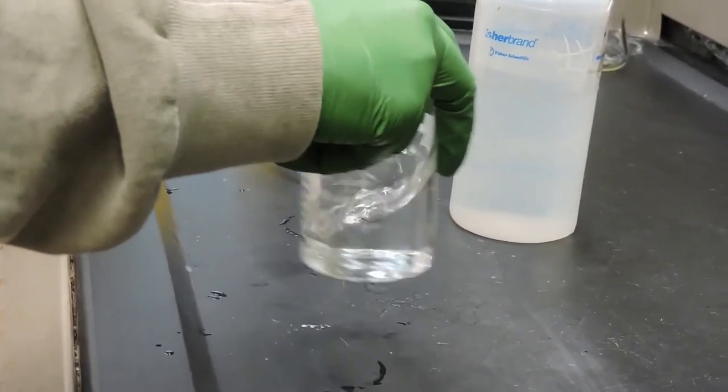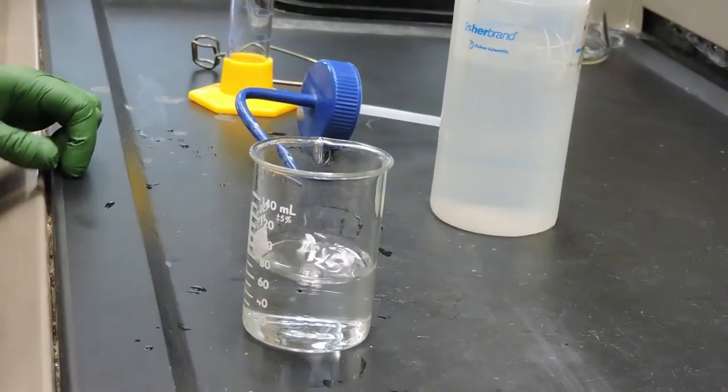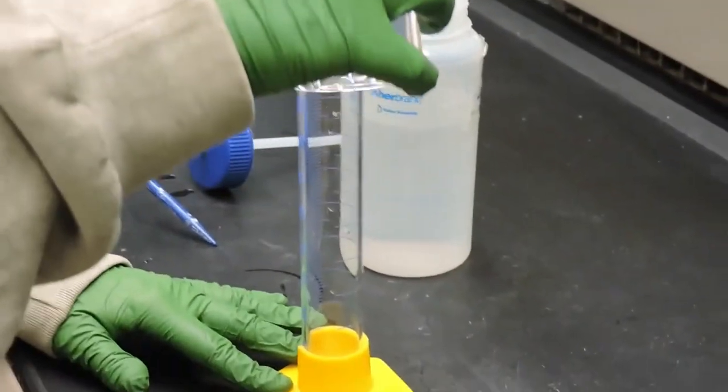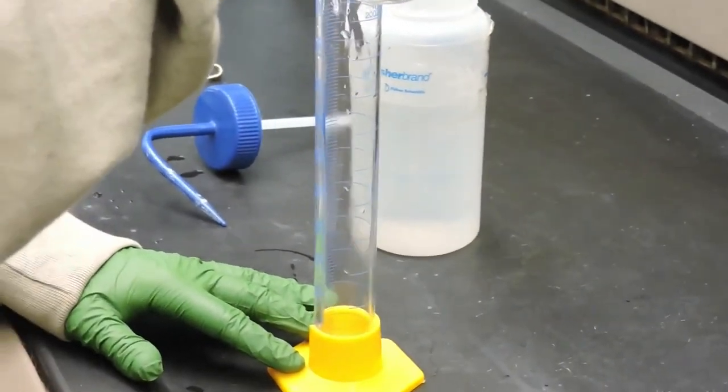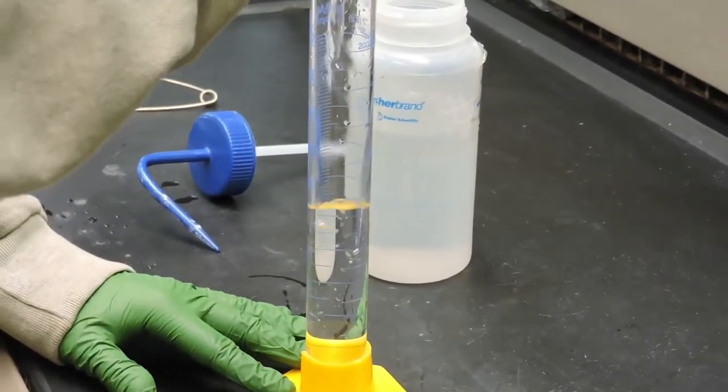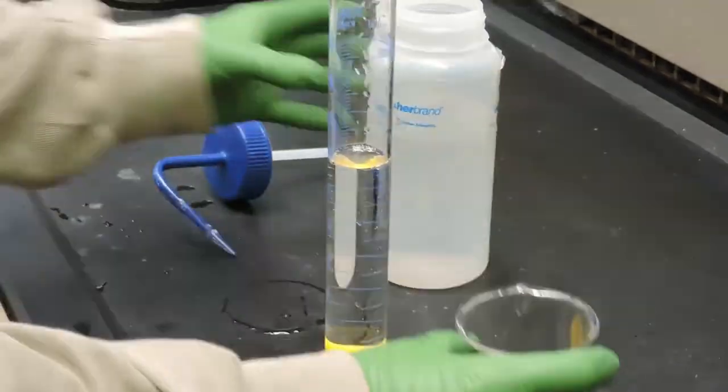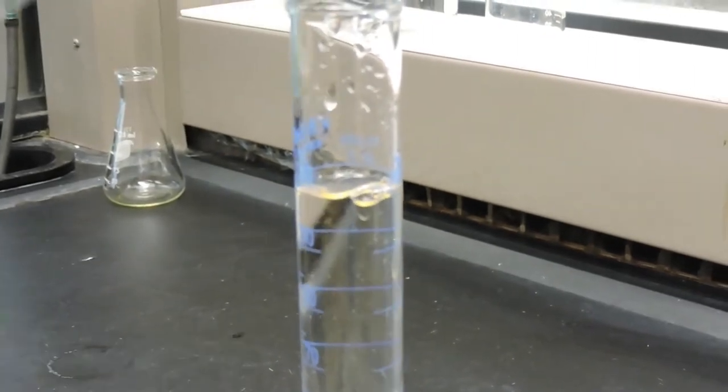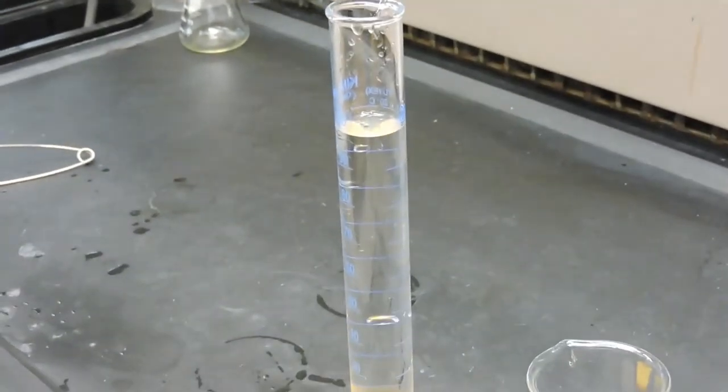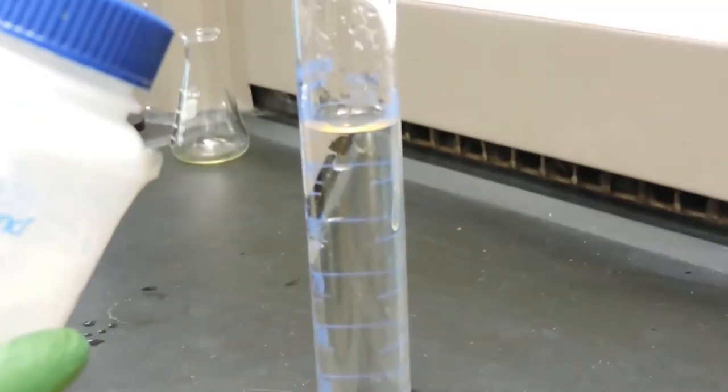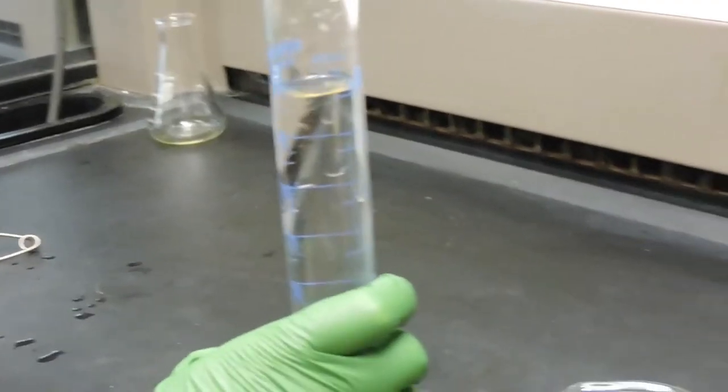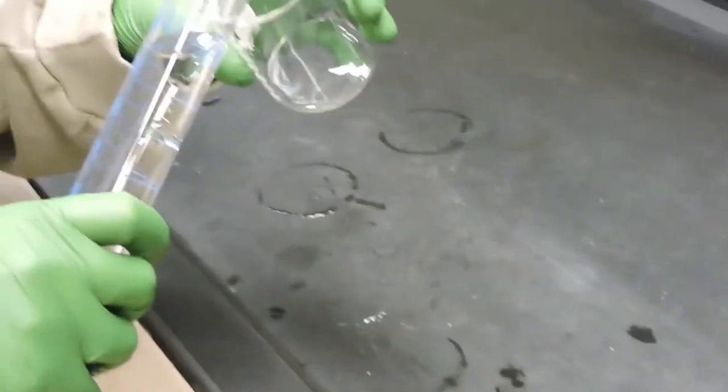Once the sugar is dissolved, we'll pour that sugar solution into a graduated cylinder and then bring the volume up to 100 milliliters. At 100 milliliters, we'll pour it back into the beaker.